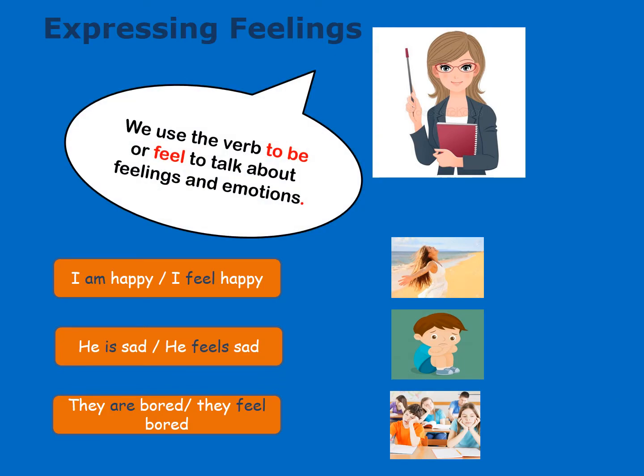Another thing that is important to mention is that we can use the verb 'to be' or 'feel' to talk about feelings and emotions. For example, I can say: I am happy or I feel happy. He is sad or he feels sad. They are bored or they feel bored.